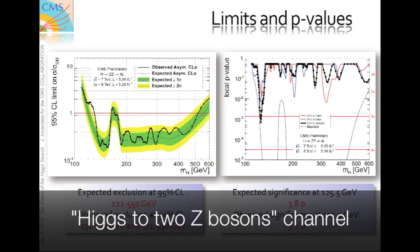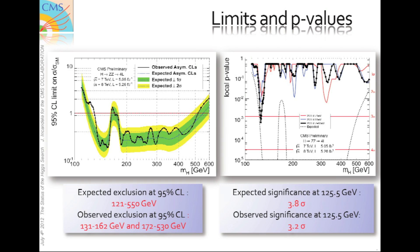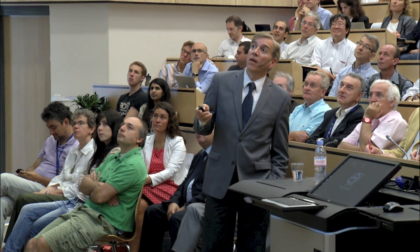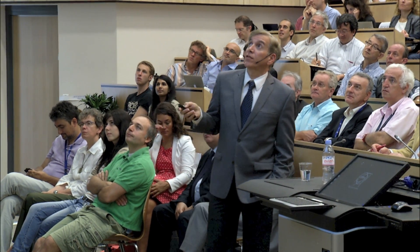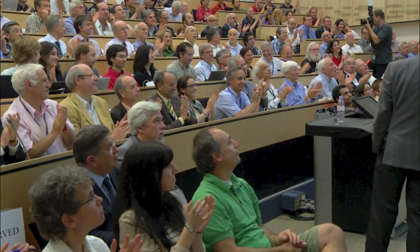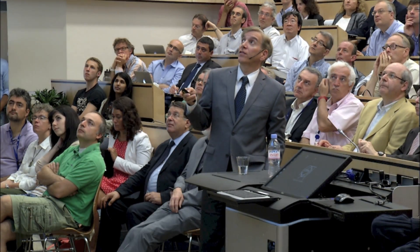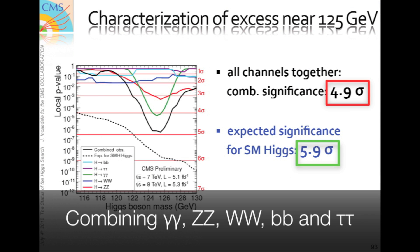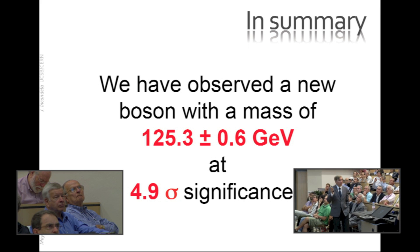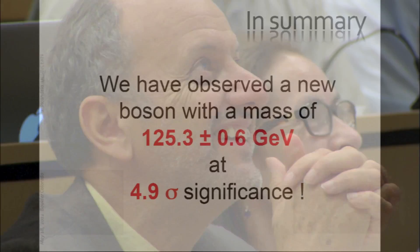If you look at the P values, our expected significance for standard model Higgs at 125.5 is 3.8 sigma, and what we're seeing is 3.2. If we combine the ZZ and gamma-gamma, they line up extremely well, and in the region of 125 GeV they combine to give us a combined significance of five standard deviations. Adding the W brings us to five sigma; adding the other two channels we fall below to 4.9 sigma. And we conclude by saying that we have observed a new boson with a mass of 125.3 plus or minus 0.6 GeV at 4.9 standard deviations.